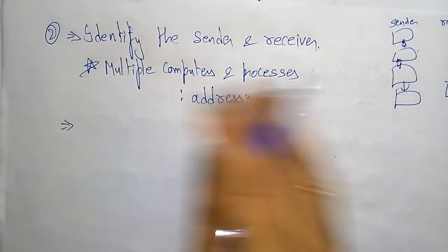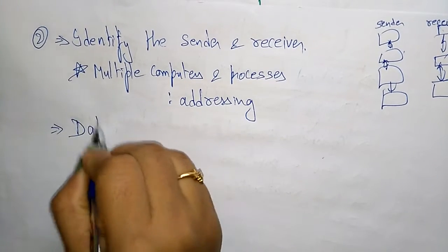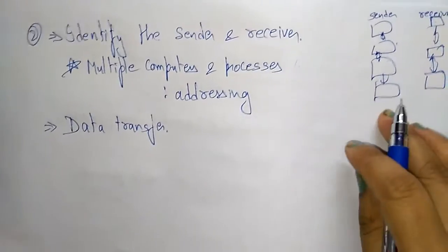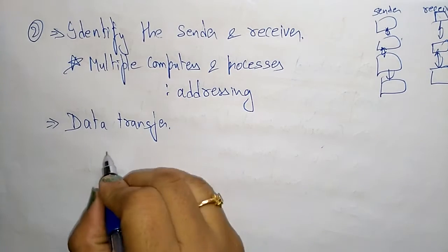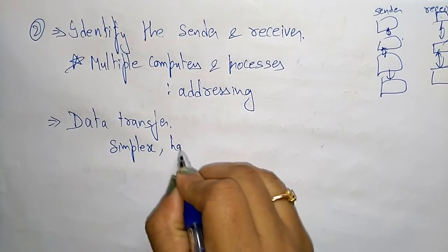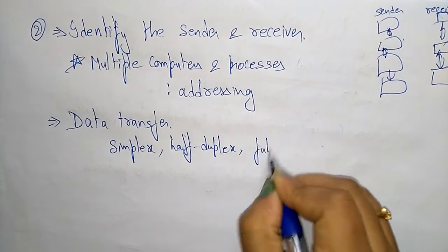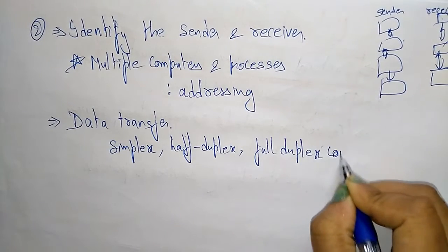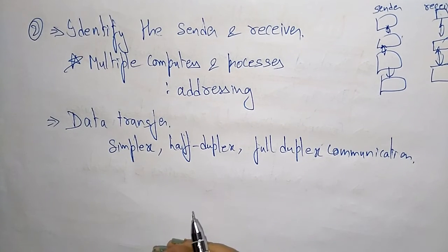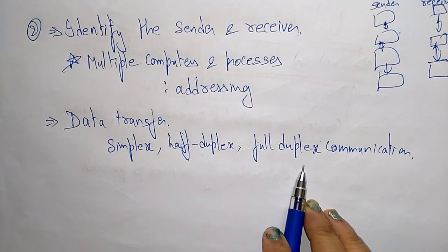So next, I identify the sender and the receiver. Now I have to transfer the data. Data can be transferred from sender to receiver in different ways: I can transfer the data from sender to receiver in simplex, half-duplex, or full-duplex communication. So in network software, I can transfer the data from sender to receiver in simplex, half-duplex, or full-duplex communication.